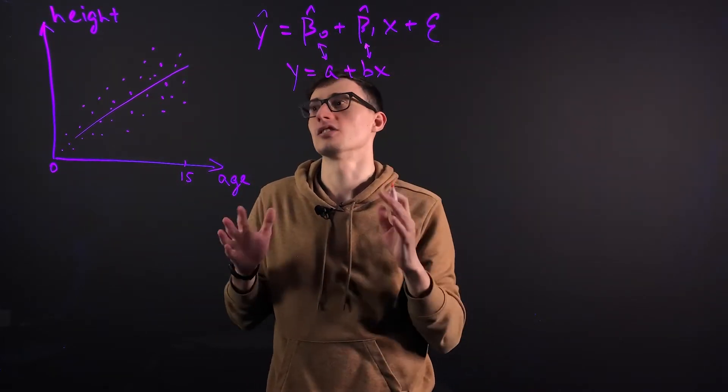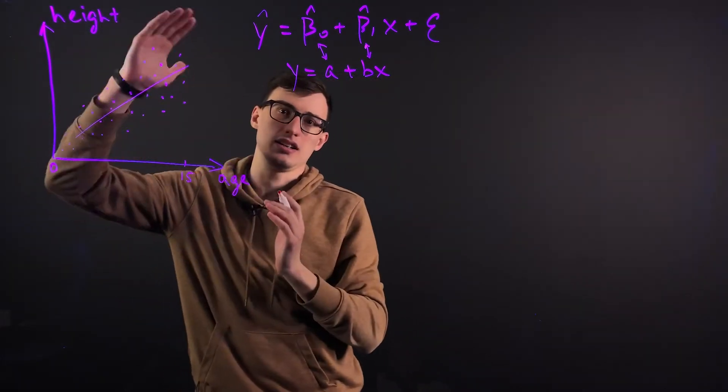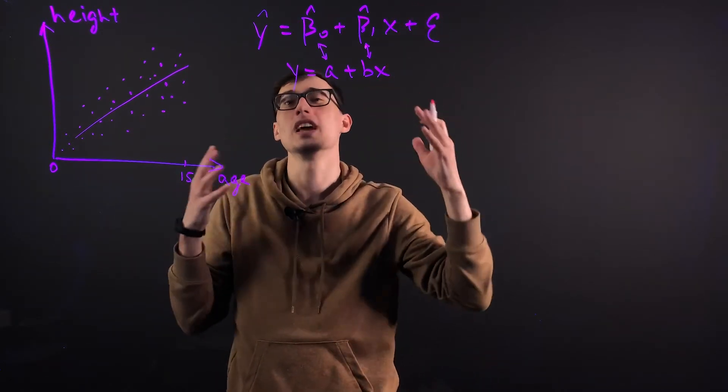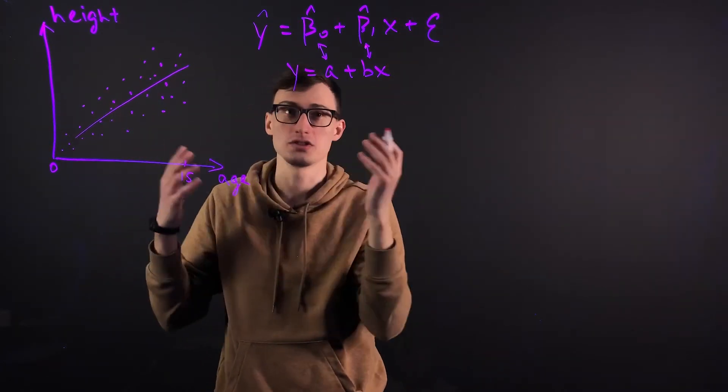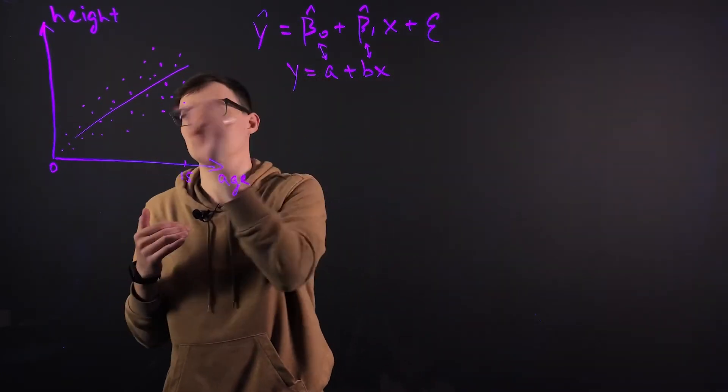Now, epsilon, the error, is how much off the line each point is. And it's just like a notation. It's not really part of the equation, so to speak. So if you were to graph it, you don't really graph the error.